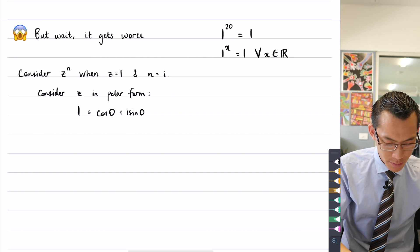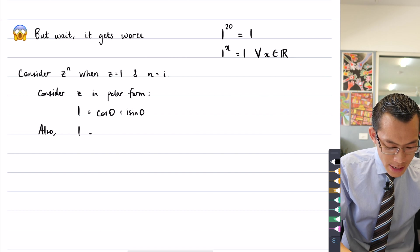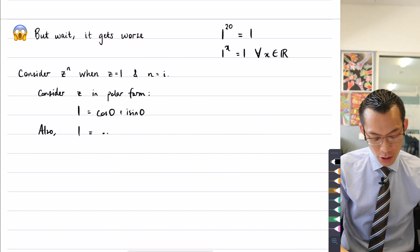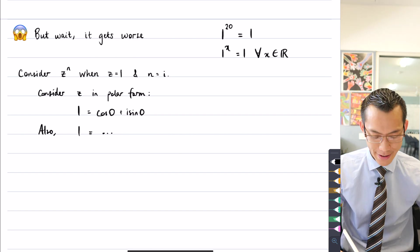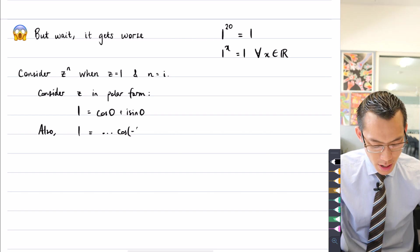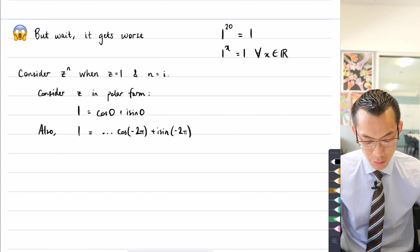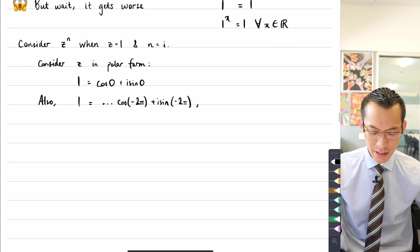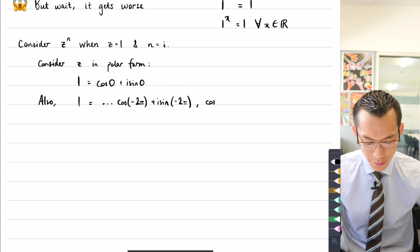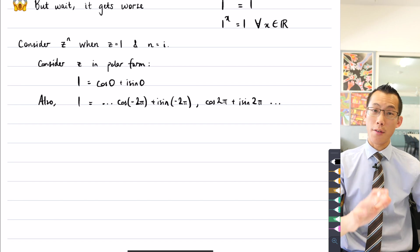Additionally or also, one equals, well I'm going to write dot dot dot because there is an infinite number of these, but let's go one to the left and one to the right. So I can write it as cos of negative two pi plus i sine of negative two pi. Of course I could do more of these but this will be enough for us to demonstrate the point. That's one to the left, let's go one to the right, so that will be cos of two pi plus i sine of two pi. And again, that sort of goes off forever.